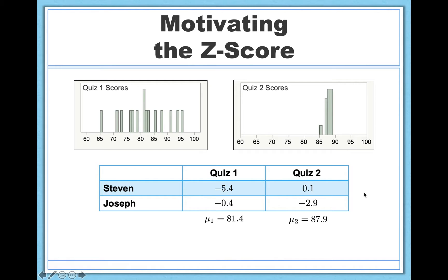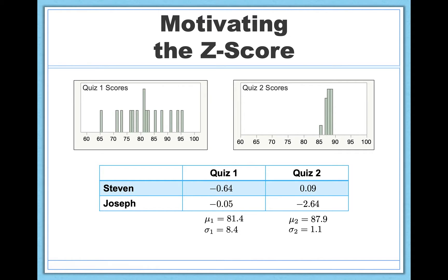We still have one more thing to account for. We've adjusted for the means, but we still need to control for the variability differences between these two quizzes. The population standard deviation for quiz 1 is 8.4 — quite high. For quiz 2, it's only 1.1 — a very tiny standard deviation. We're going to adjust for these differences in variability by dividing each deviation from the mean by the standard deviation. Doing that gives us our z-scores, and now we can interpret how these two students are doing on these two quizzes in a standardized way.